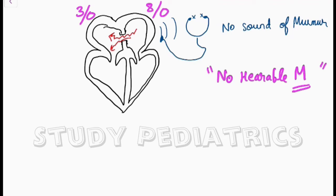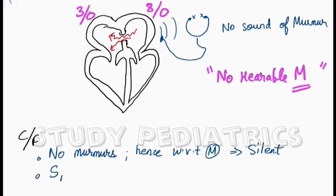Coming to the clinical features, there is no murmur. With respect to murmurs, the heart is silent. S1 is normal, S2 is wide and fixed split.